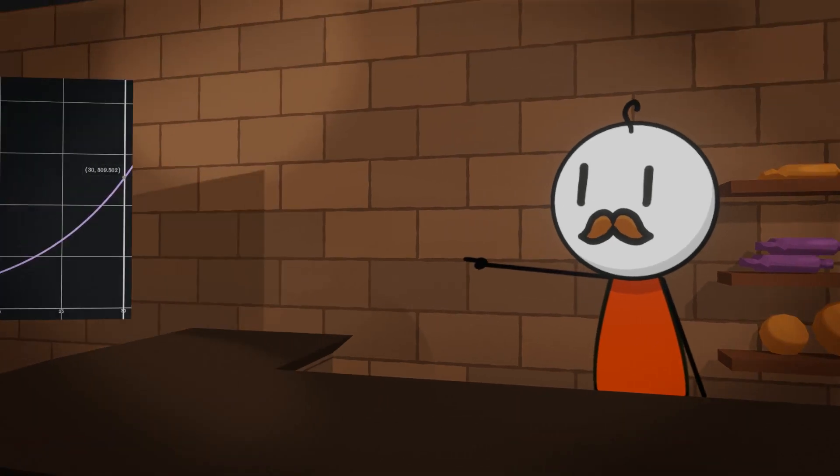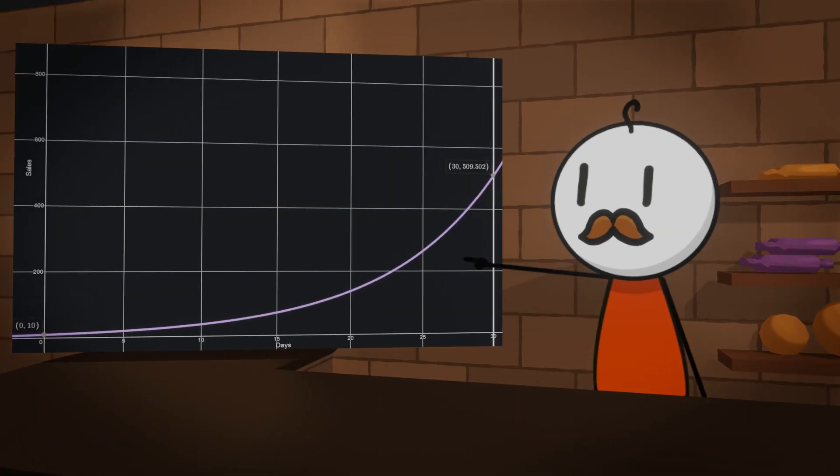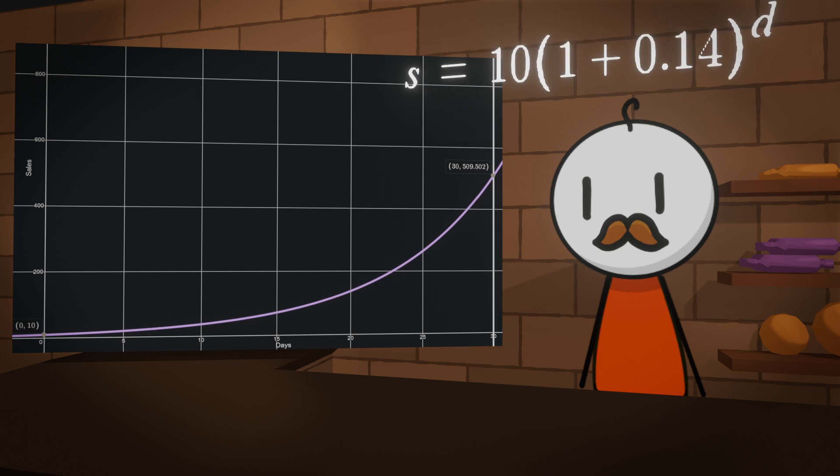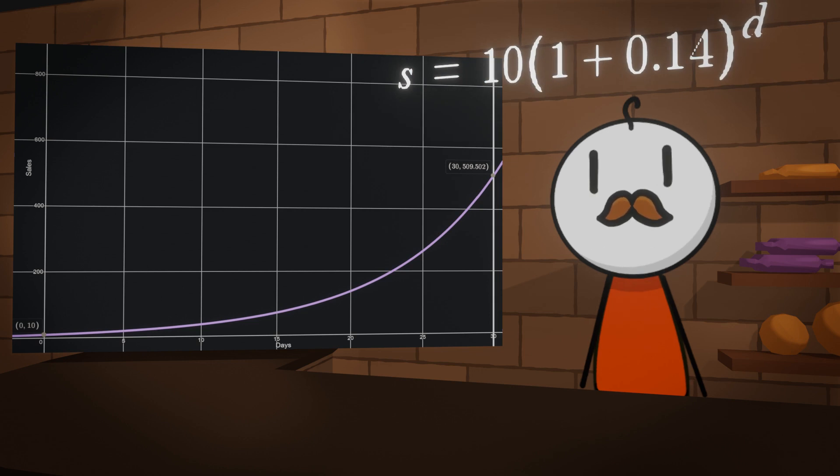As you can see, it is quite the popular item as it's increasing exponentially. The equation that can represent this is sales equals 10 times 1 plus 0.14 to the power of days past.